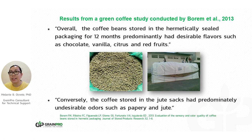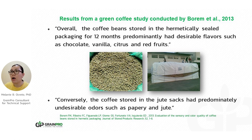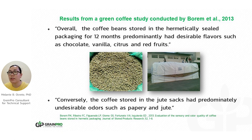We have several studies conducted to prevent losses. One example is for coffee beans — a study by Dr. Morem and colleagues published in 2013 — where coffee beans were stored for 12 months. With hermetic storage, they were able to preserve the quality. Desirable flavors for coffee stored in hermetic storage were chocolatey, vanilla, citrus, and red fruits. For coffee stored in jute sacks, they observed undesirable odors such as papery and jute.